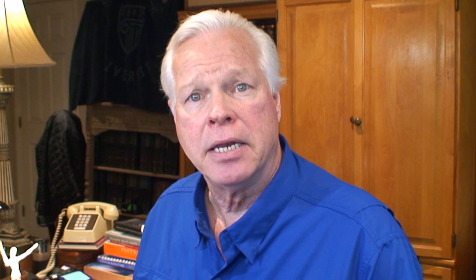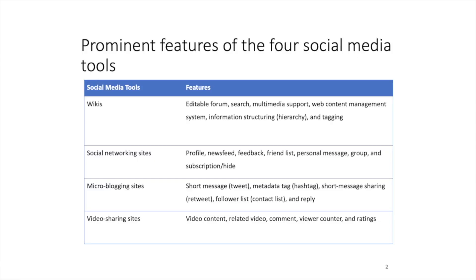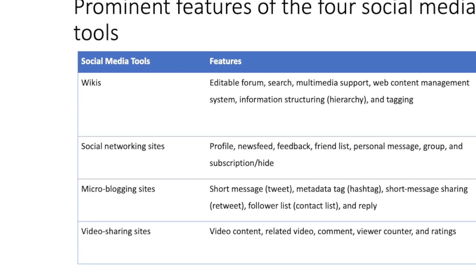Prominent features of the four social media tools are also reviewed. Wikis include features such as editable forum, search, multimedia support, and web content management systems. Social networking sites include features such as profile, news feed, feedback, friend list, and personal message.